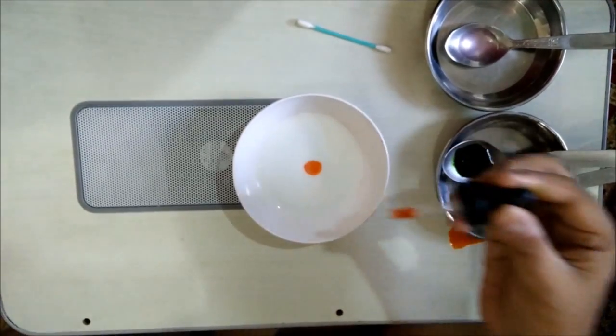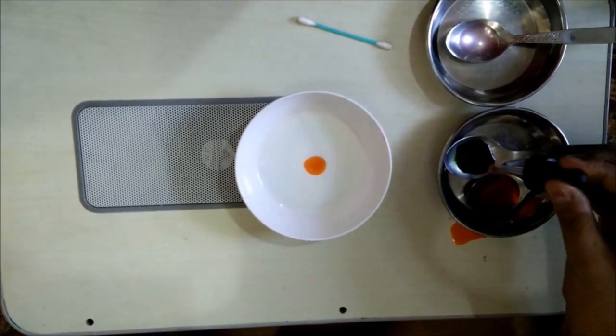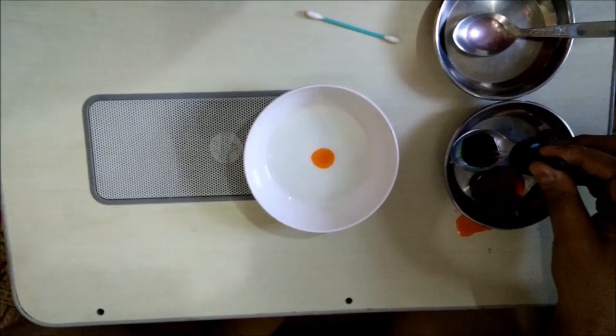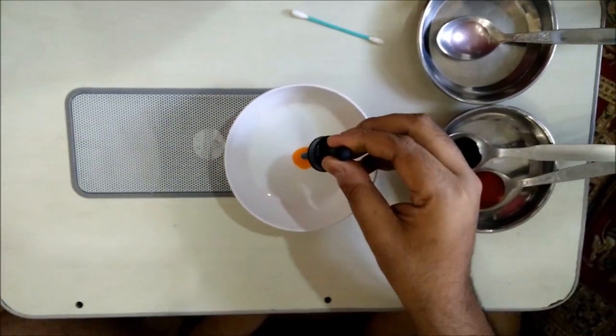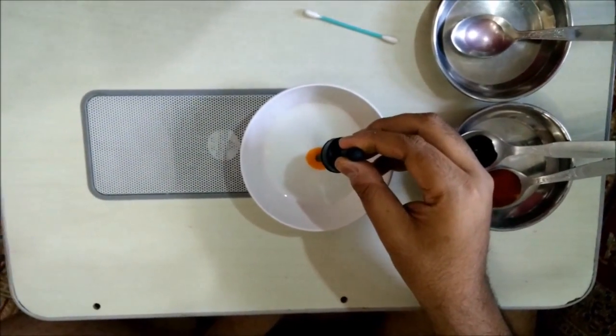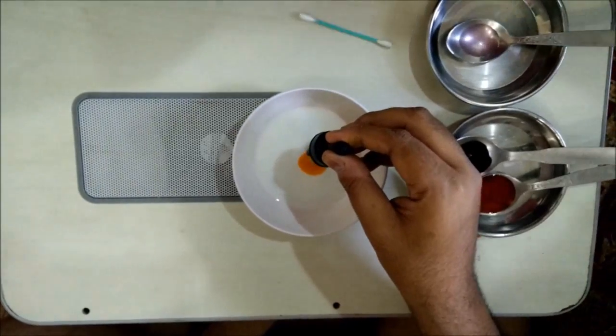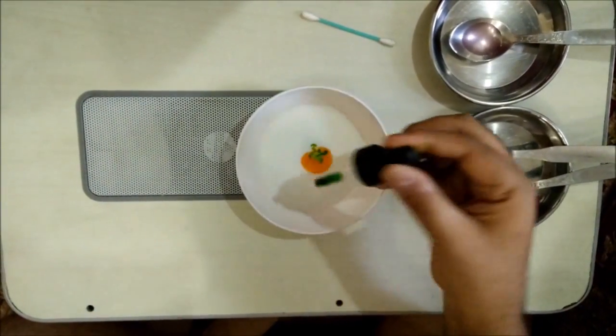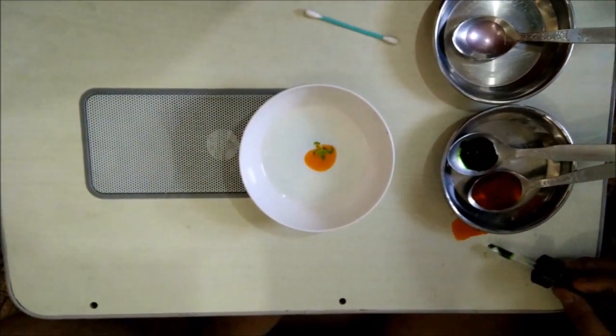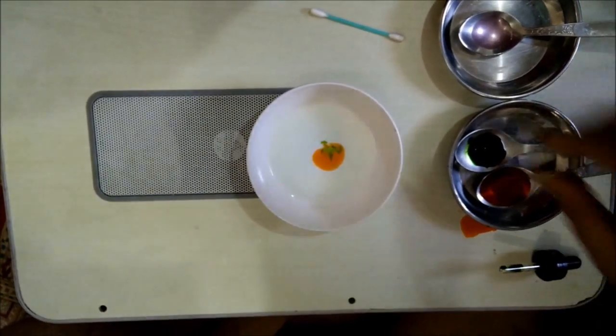Like this. And now we will take the other color and we will drop this also at the center of the milk, gently like this. Once you have done that, what you need to do is take this cotton bud.